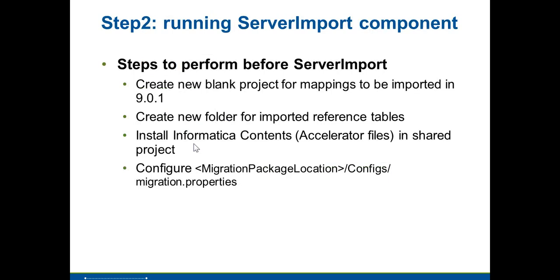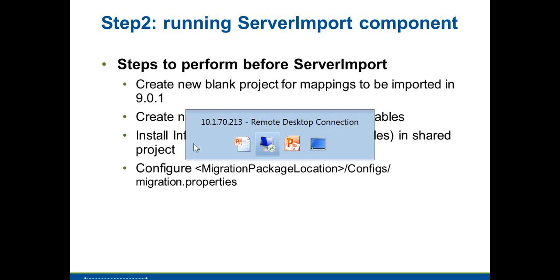Moving to the server import component, there are some prerequisites before doing this. You need to create a blank project in a 9.0.1 repository and create a folder for all the reference tables to be imported. You also need to have the core accelerator files installed on a shared project, because there could be plans that reference these files and you will have problems if the installation is not done prior to migration. Content installation must be done first. The last step before running the server import is to configure the file called migration.properties, located under the migration zip file.